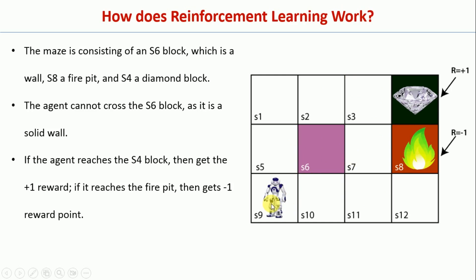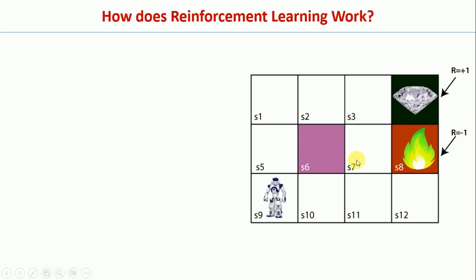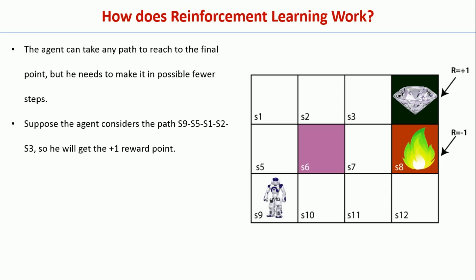Whenever this agent or AI robot reaches the goal state, it will be given a reward of plus 1. Whenever it goes through the pit or fire, it will be given a reward of minus 1. The goal of this particular robot is to find an optimal path and then reach this goal state.